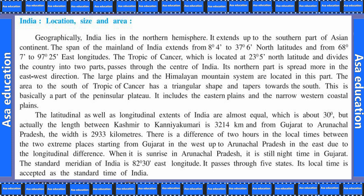The area to the south of the Tropic of Cancer has a triangular shape and tapers towards the south. This is basically a part of the Peninsular Plateau and includes the eastern plains and the narrow western coastal plains. The latitudinal and longitudinal extents of India are almost equal at about 30 degrees, but the length from Kashmir to Kanyakumari is 3,214 km and the width from Gujarat to Arunachal Pradesh is 2,933 km.